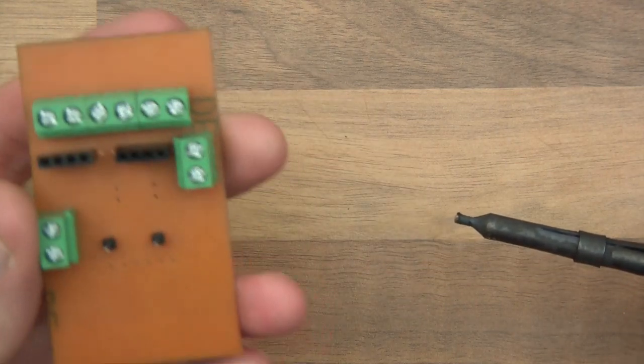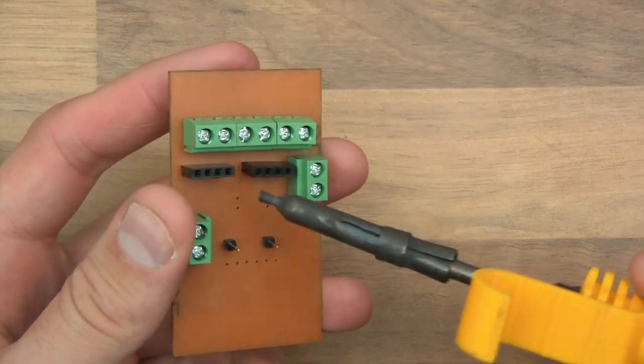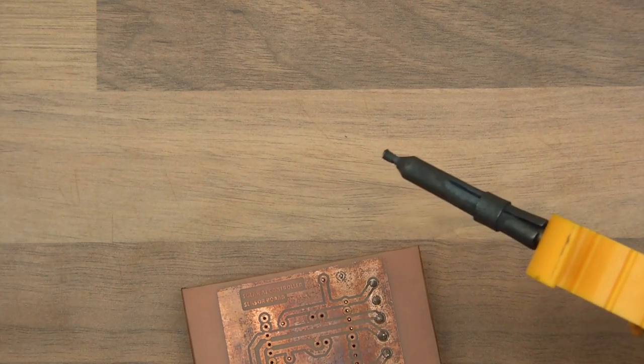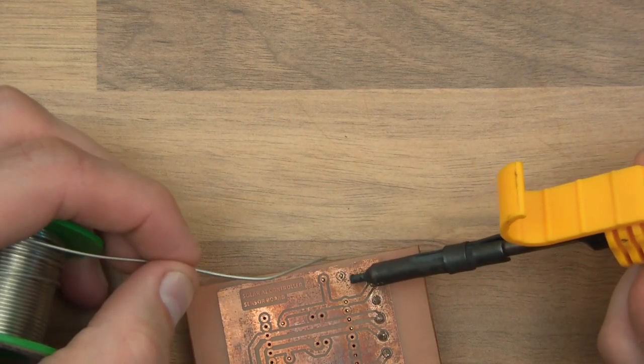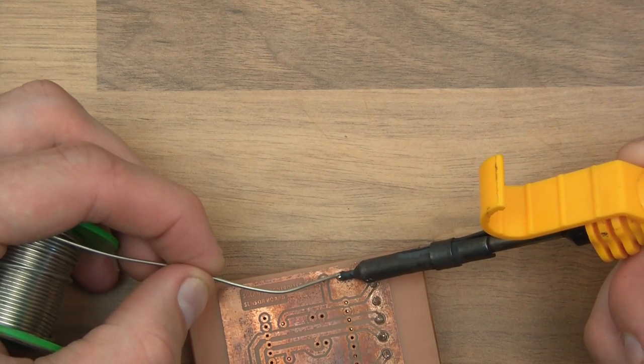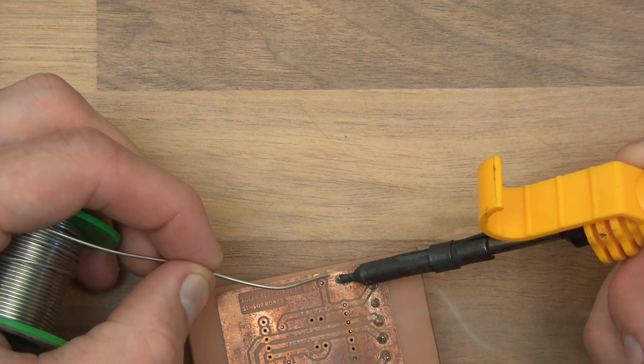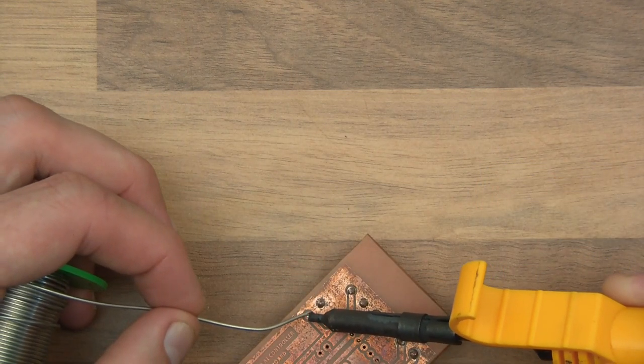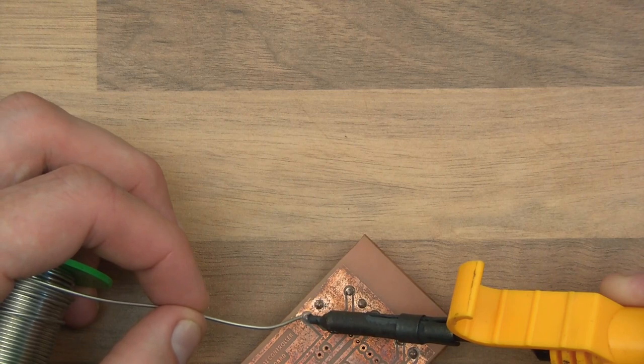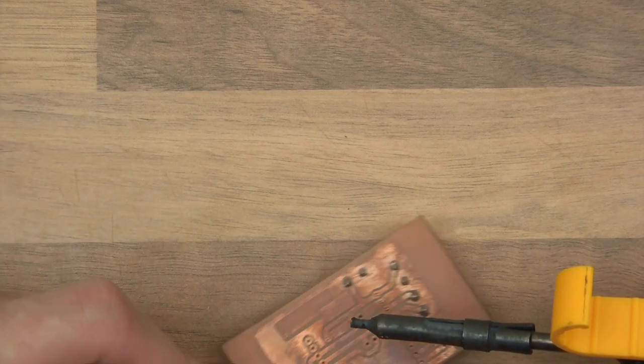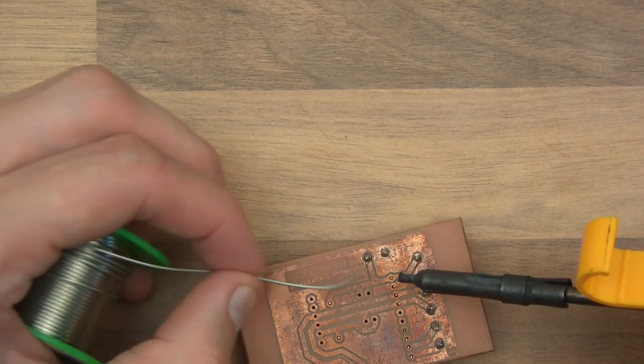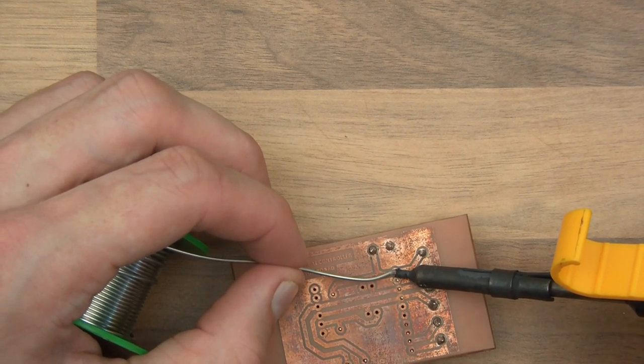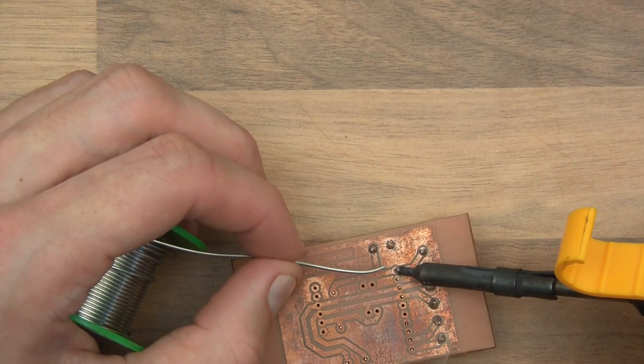On this board here you can see there are these headers, and basically in this board there are going to be three sensors. There's a light sensor, a current sensor, and a clock which isn't really a sensor but it gets me a bit of data.